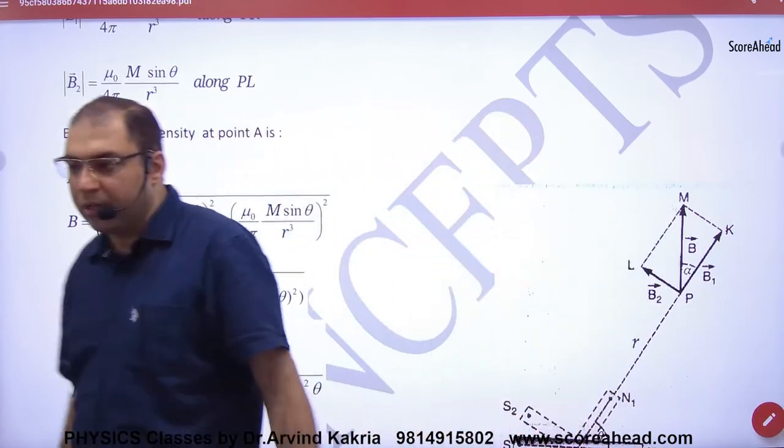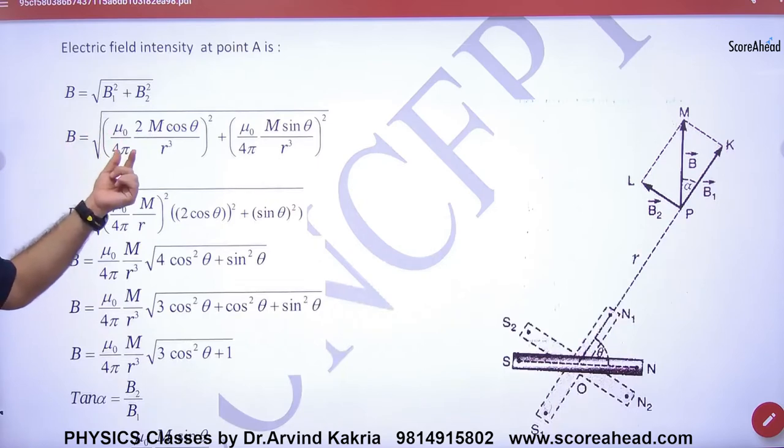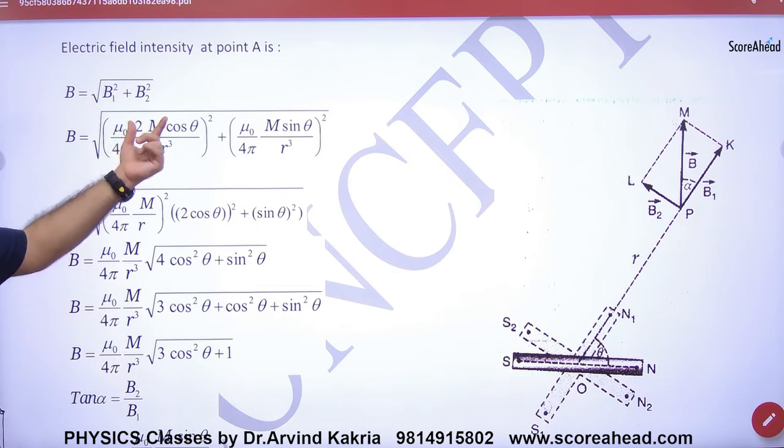The same. B-axial square, B-equatorial square. We have proved it. It's the same. Just take electrostatics expression, the same thing we have done. Where P is M and B-naught by 4π. The same answer will come.